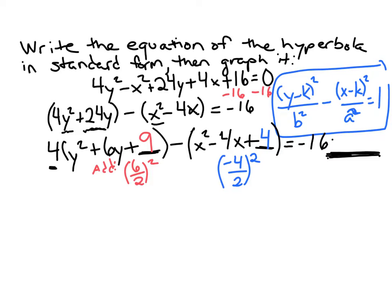Now there's one thing to be really careful of with these problems when you have something out in front of the parentheses. When we squeeze that 9 inside this parentheses we didn't really just add 9. Because of the 4 out front this is really plus 4 times 9 so this is really adding 36. So to balance it on the other side of the equation we can't just add 9, we have to add 36.